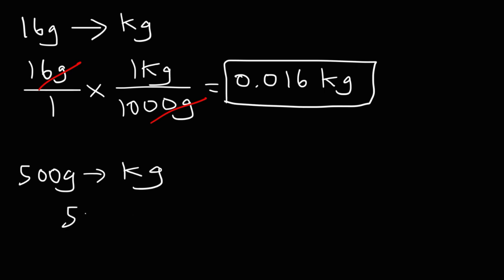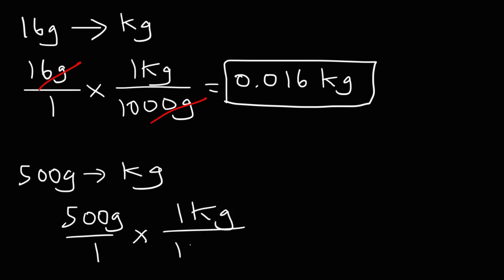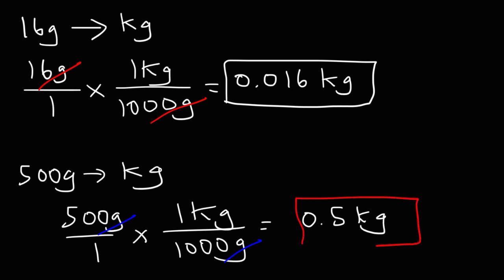For the next one, it's 500 grams over 1 times 1 kilogram per 1,000 grams. So it's 500 divided by 1,000, which is 0.5 kilograms. So that's basically it for this video — now you know how to convert from grams to kilograms and kilograms to grams.